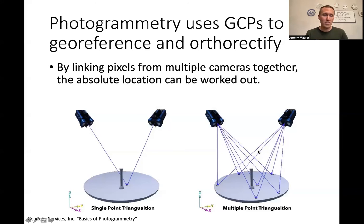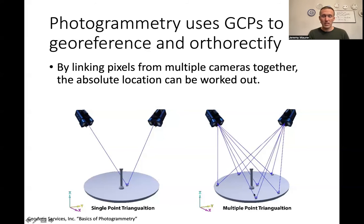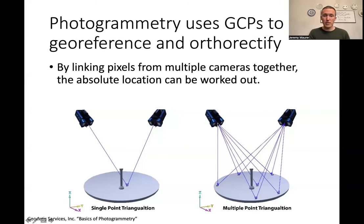We can actually do photogrammetry even without any GPS geotagging on the images — we just collect ground control points and use those without a good starting point for each camera. However, the process works better if we have a GPS location for each camera, even if it's not very accurate, because that gives us a good starting point to refine from.